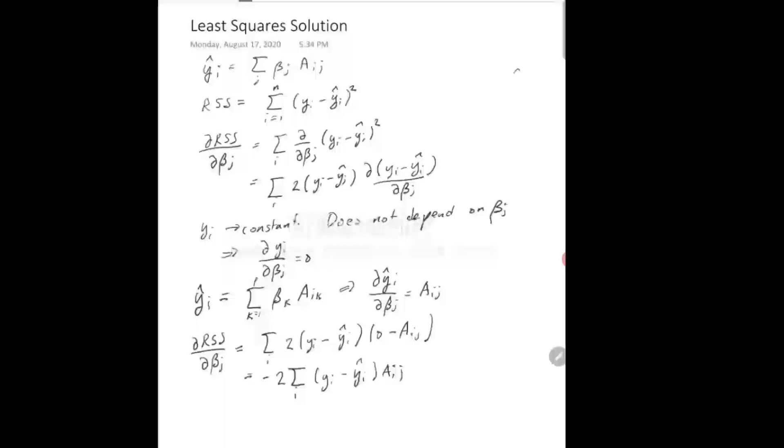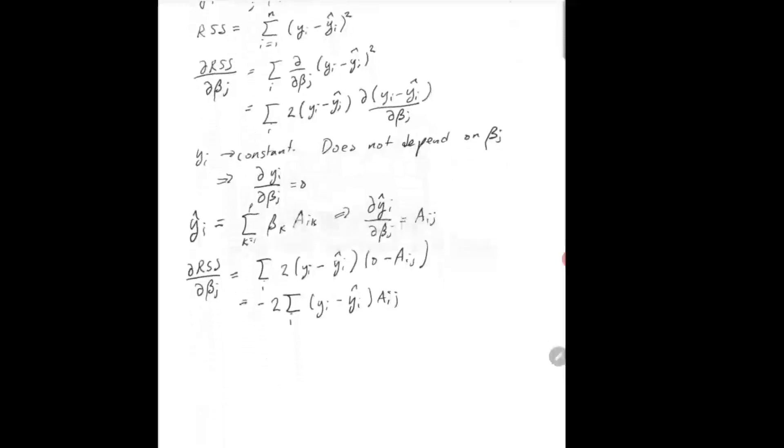Okay. Now, I want to set that this derivative has to be 0 for all j. That means we want d RSS by d beta j is equal to 0 for all j.